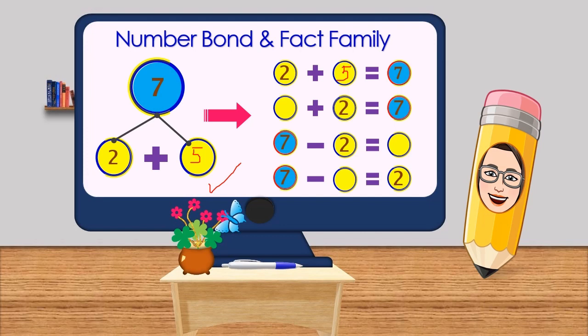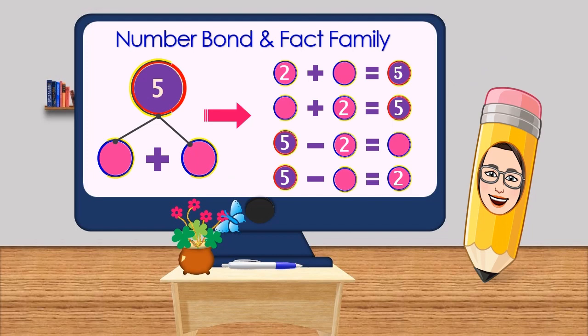Right. What about this: blank plus 2 equals 7? Yes, it's 5. Let's do the reverse: 7 minus 2 is equal to... 5. Yes, that's right.